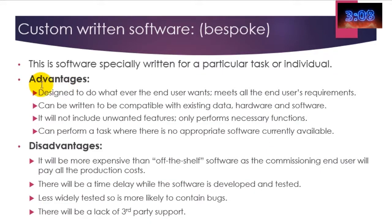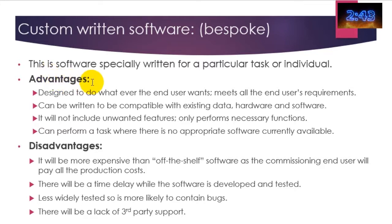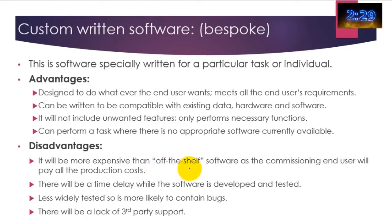Custom written software is a bit like special purpose software. The difference is that it's actually produced and written by a software developer or programmer to meet the needs of a specific client. A bank, for example, might want a system produced just for that bank, and a software house — like Gemini, Ernst and Young, or even Microsoft, or it might be a computer science student — will produce software that meets the client's needs. The major advantages are that it clearly meets the requirements of the customer and only has the features you want.